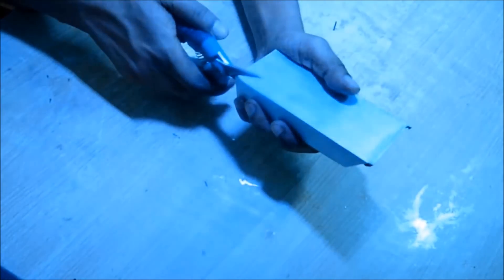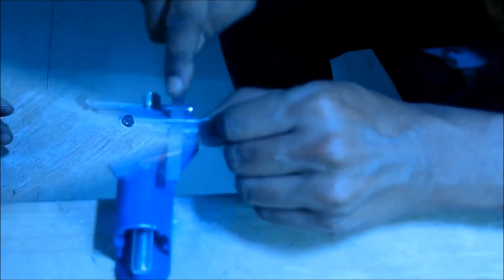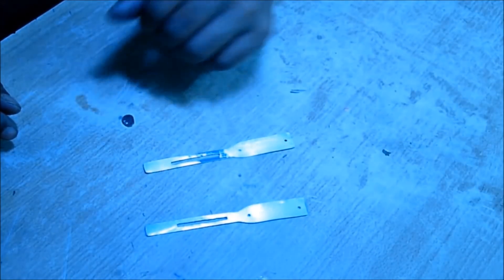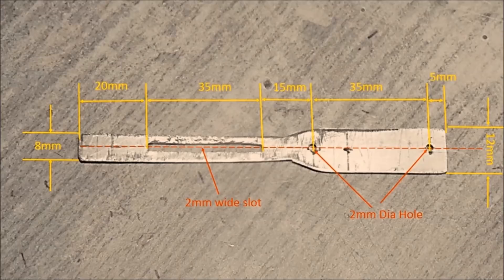Now to make the legs you need aluminum sheets. Just cut the two sheets like this. It has one slot and two holes. The dimensions are given here.